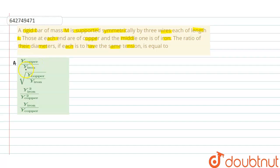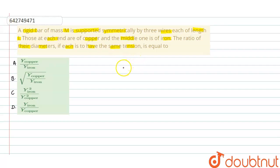We have four options: option A is Y-copper upon Y-iron, option B is root of Y-copper upon Y-iron. We need to determine which of the following options is correct. Now we can start from the given information.